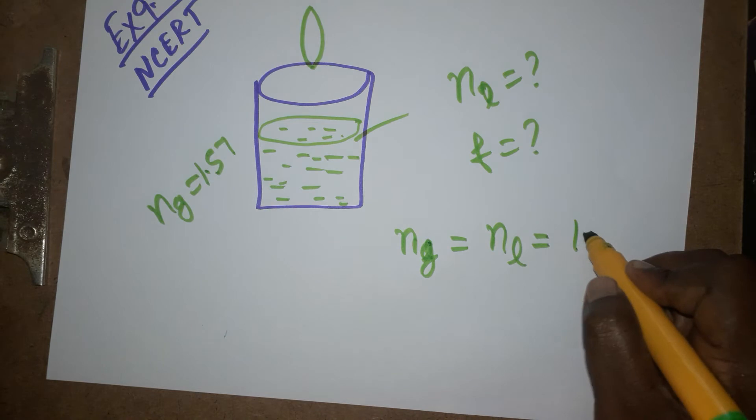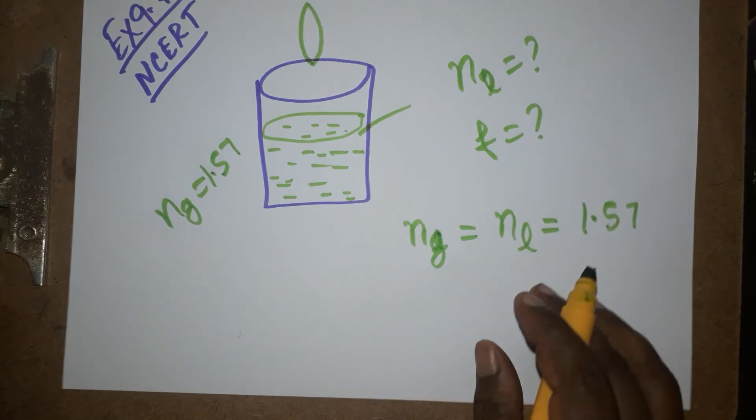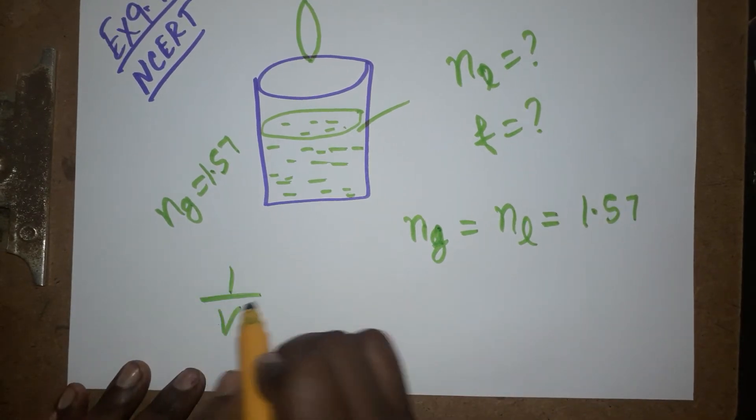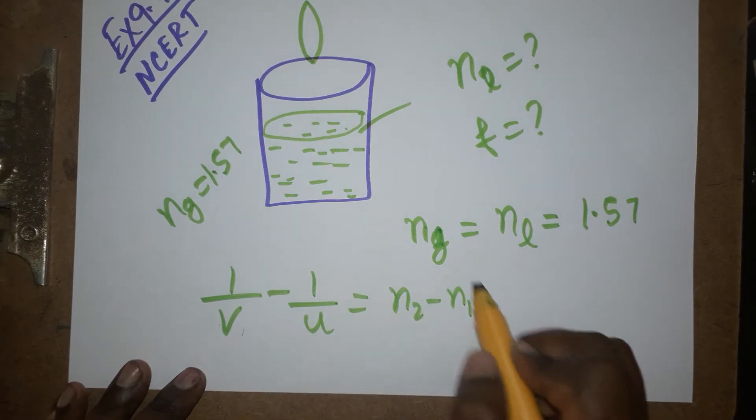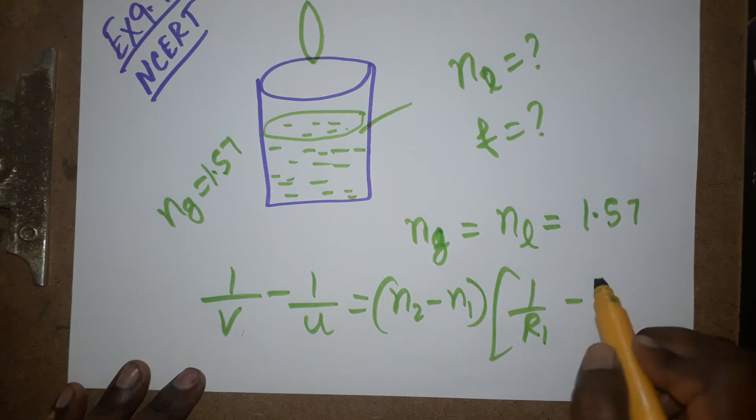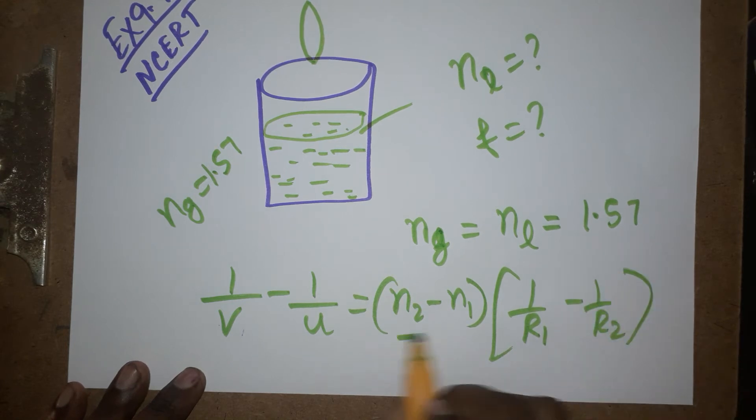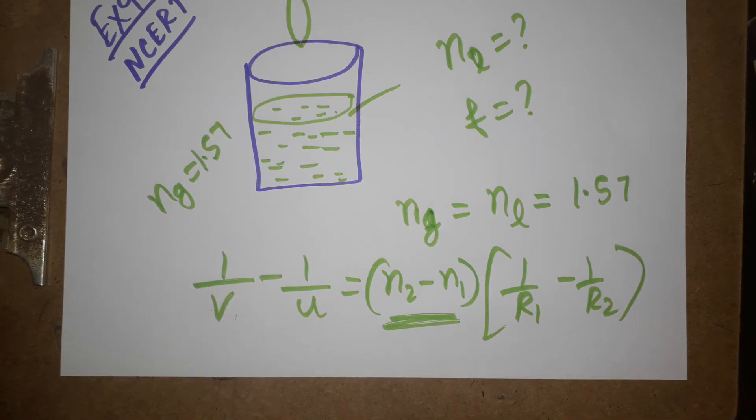According to the formula, 1/v minus 1/u equals (n2 minus n1) times (1/r1 minus 1/r2). When n2 equals n1, we will get zero.